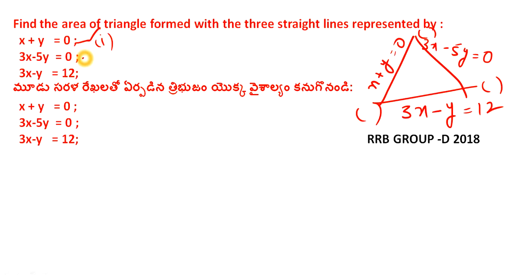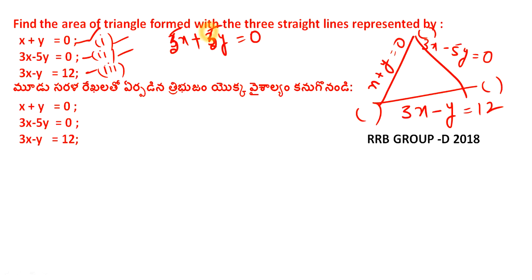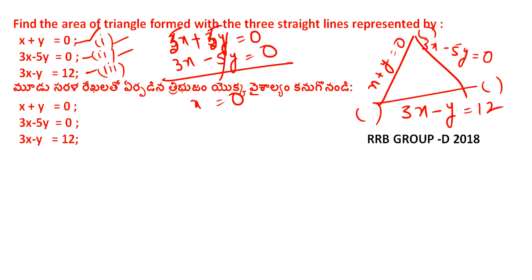We will solve equations 1 and 2. From equation 1: x + y = 0. Multiply by 5: 5x + 5y = 0. Equation 2: 3x − 5y = 0. Adding, we cancel — x = 0. Then 2x = 0, so x = 0. Substituting: 0 + y = 0, so y = 0. First point is (0, 0).